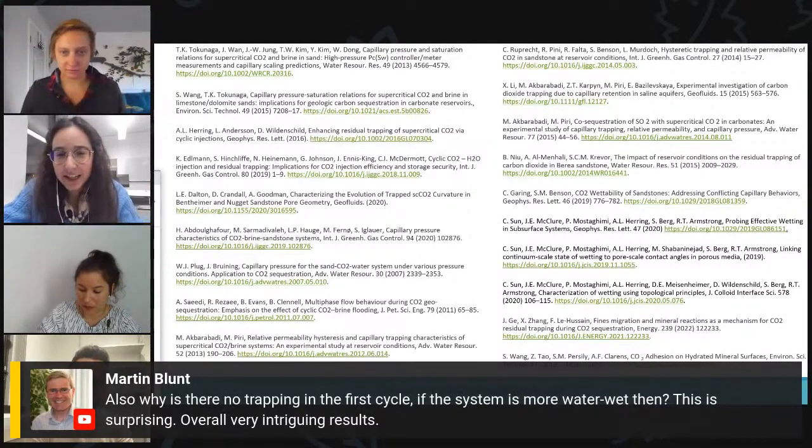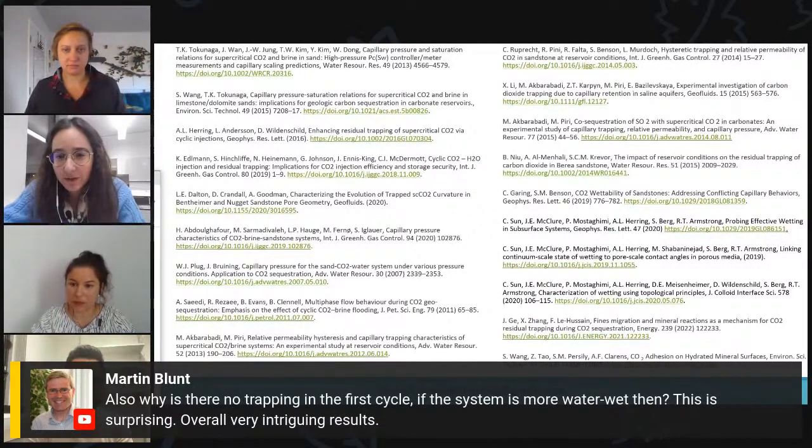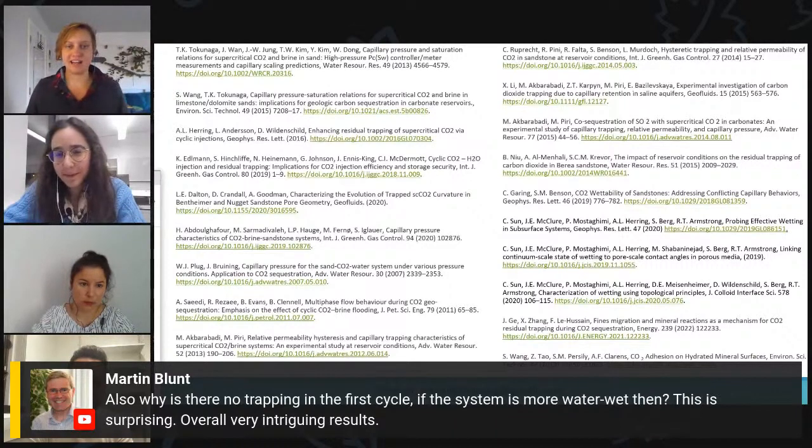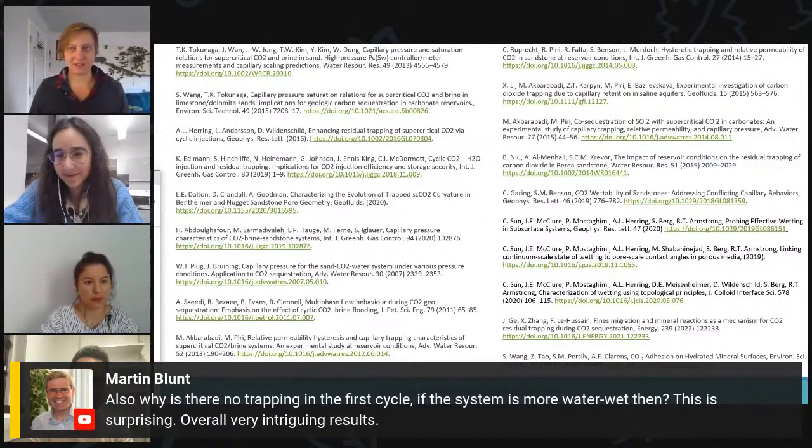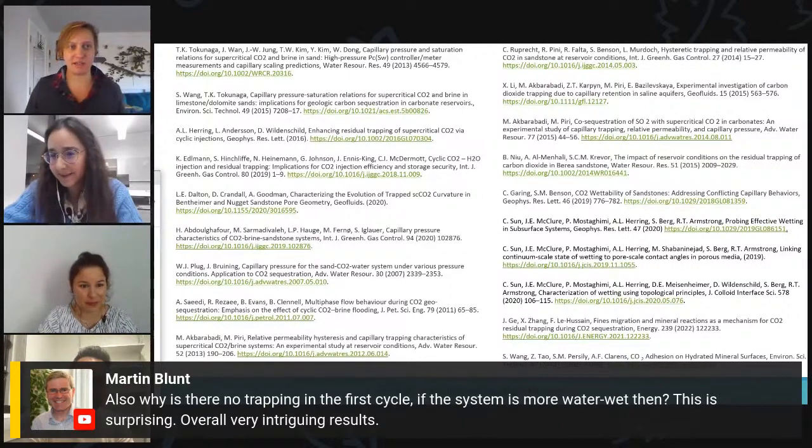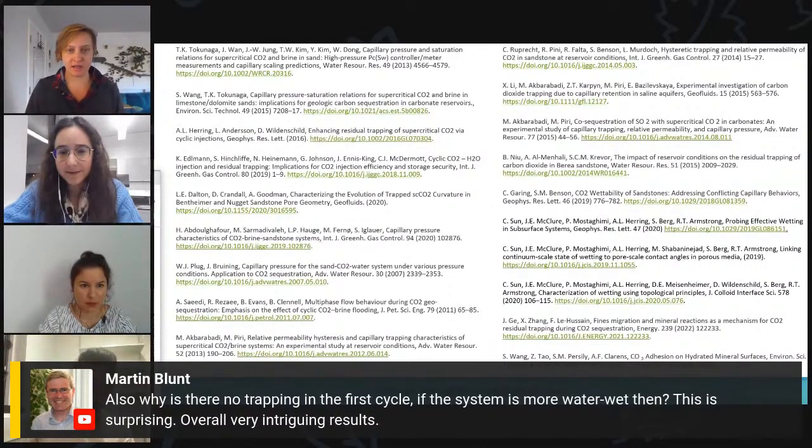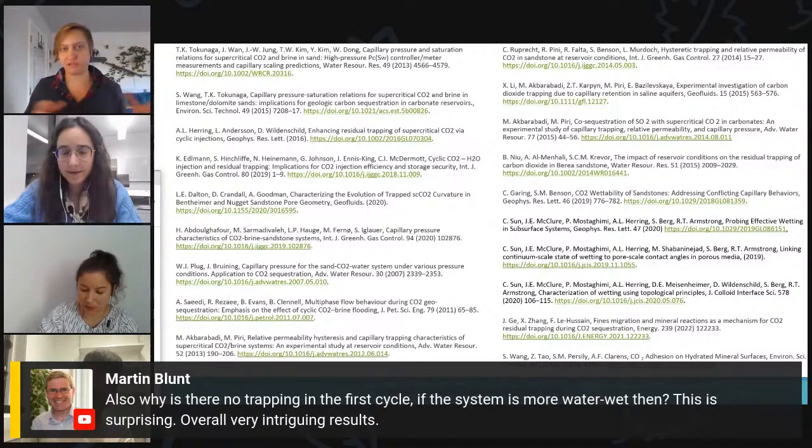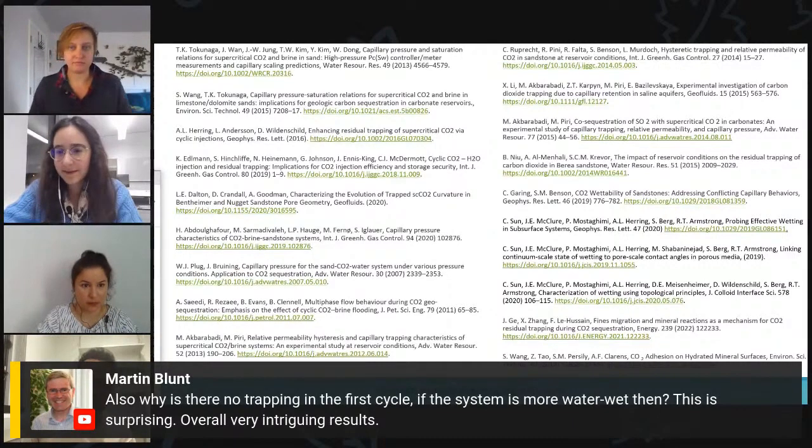Great, thanks. There's another question from Martin also. Also, why is there no trapping in the first cycle? If the system is more water-wet then, this is surprising of all very interesting results. Yeah, so that's also something that was very surprising to us as well. I think it's just that we are at a very high flow rate. So, we're at a capillary number of 10 to the minus five during the imbibition. So, I think that this is just so high that we're flooding out all of the CO2. We also have a very low interfacial tension under these pressure temperature conditions. And so, I think that we're just out of the capillary dominated flow regime.